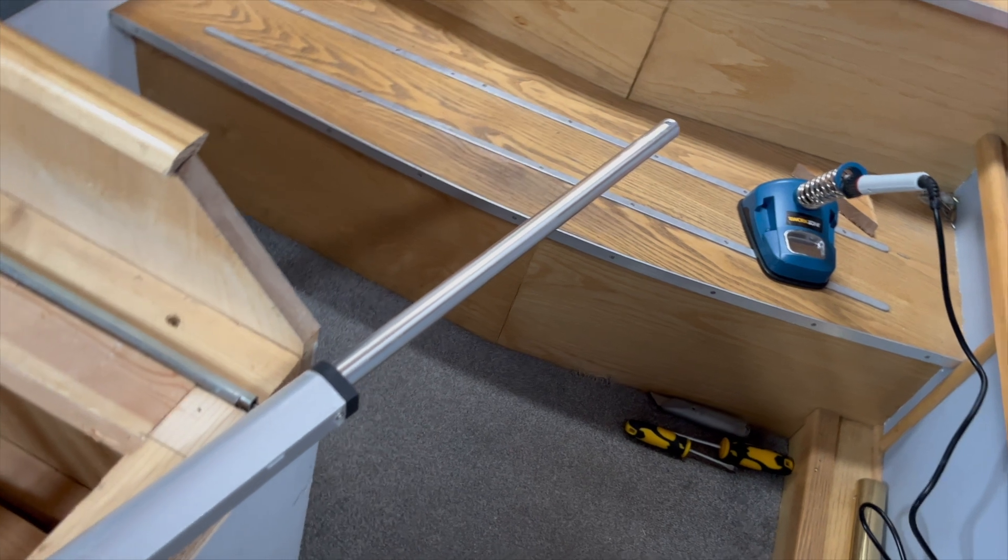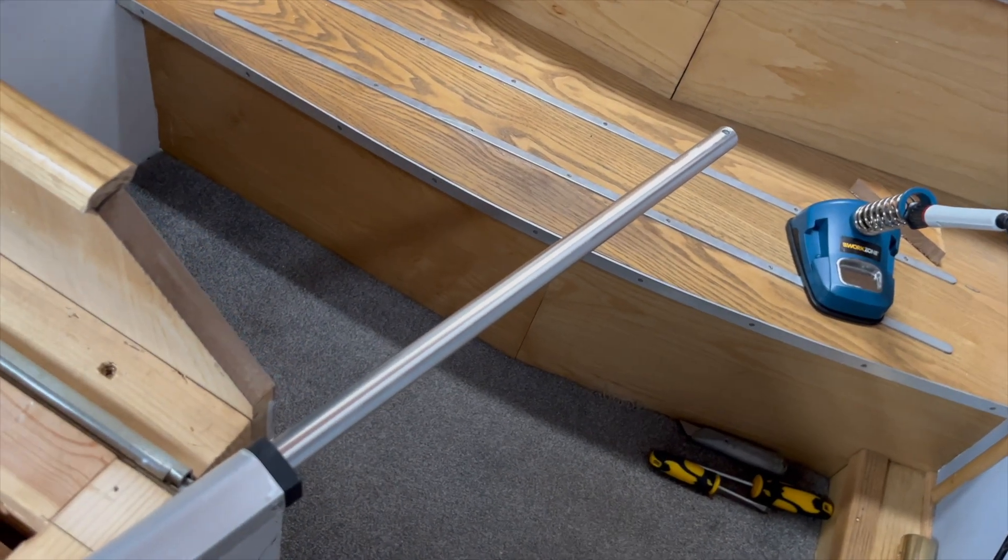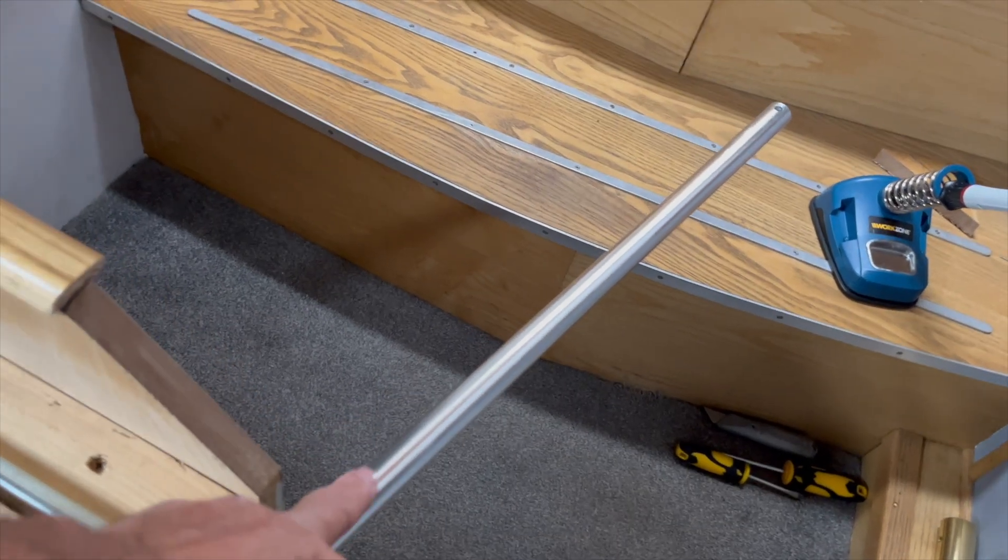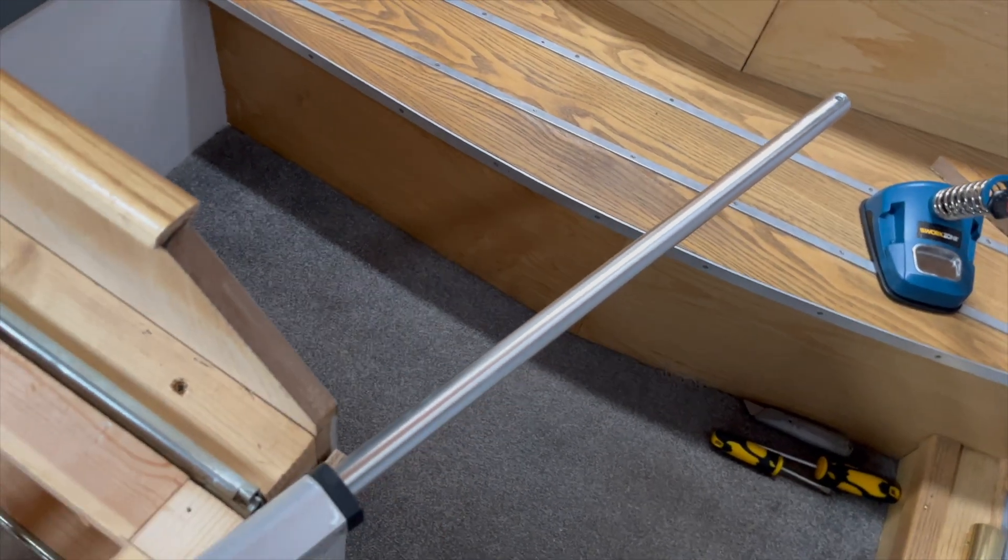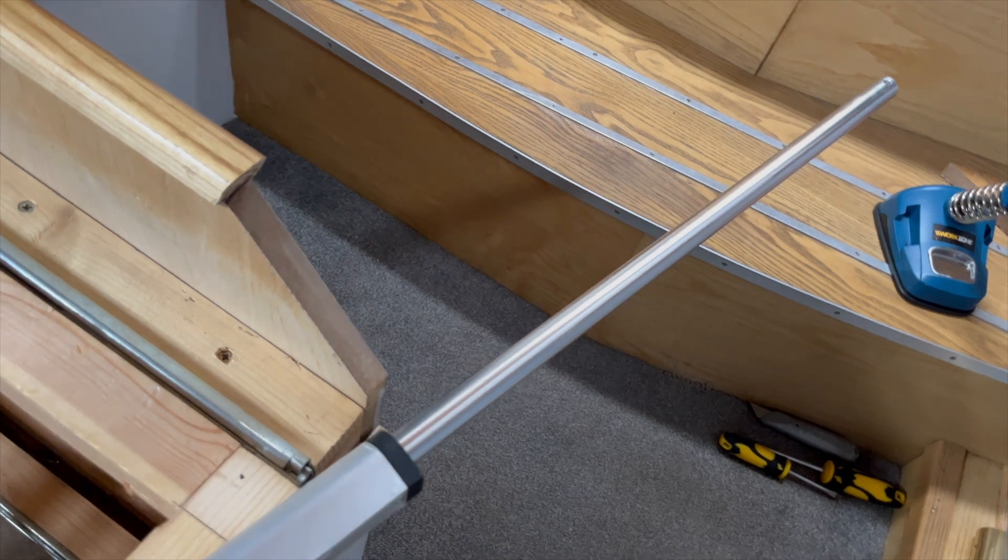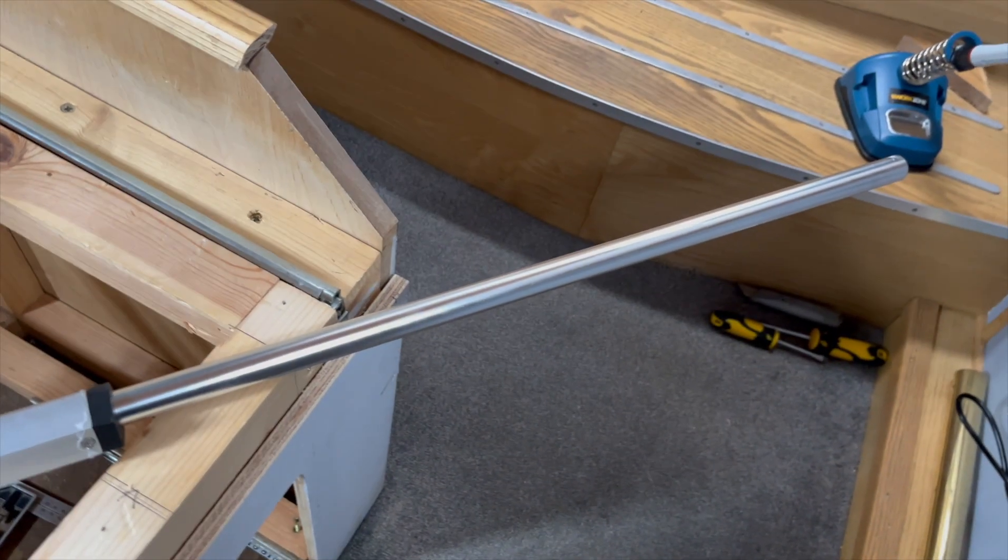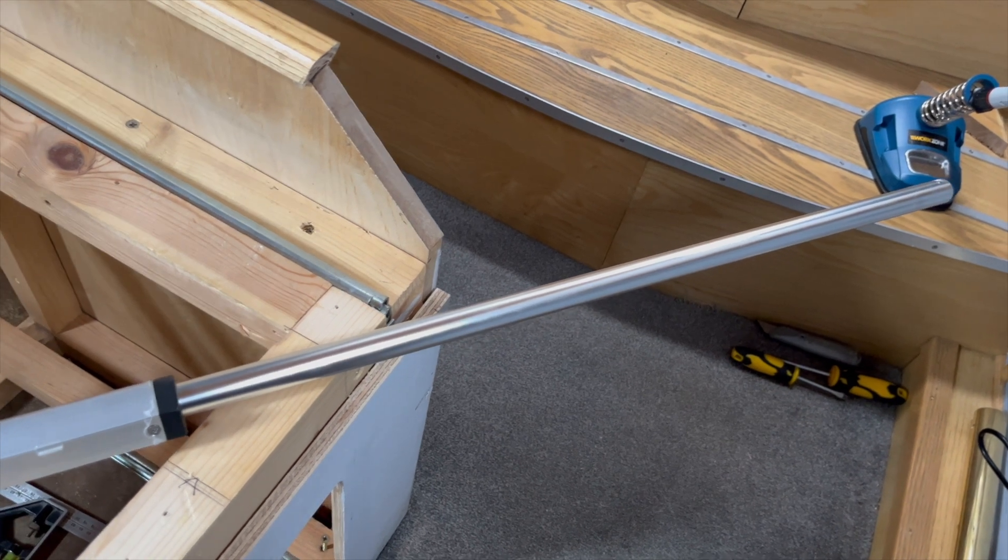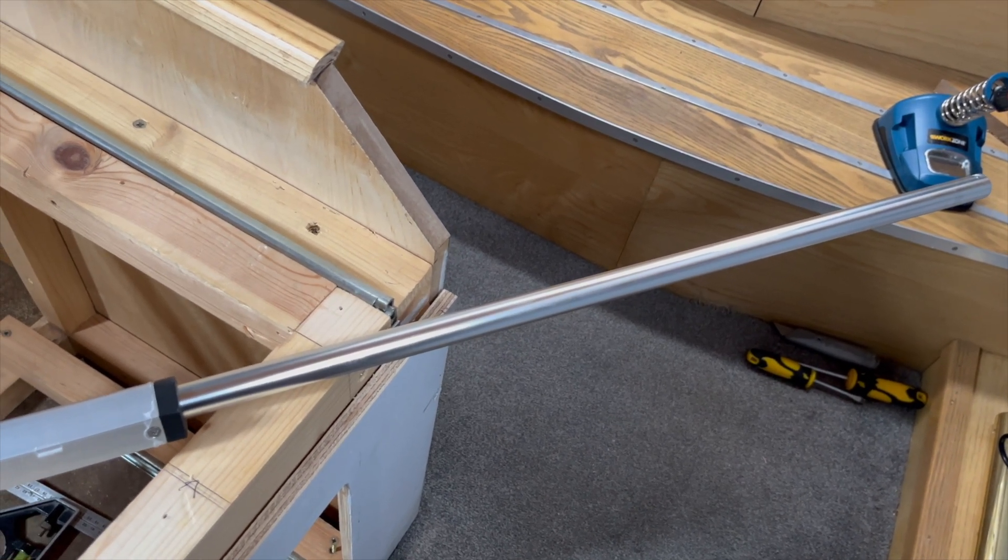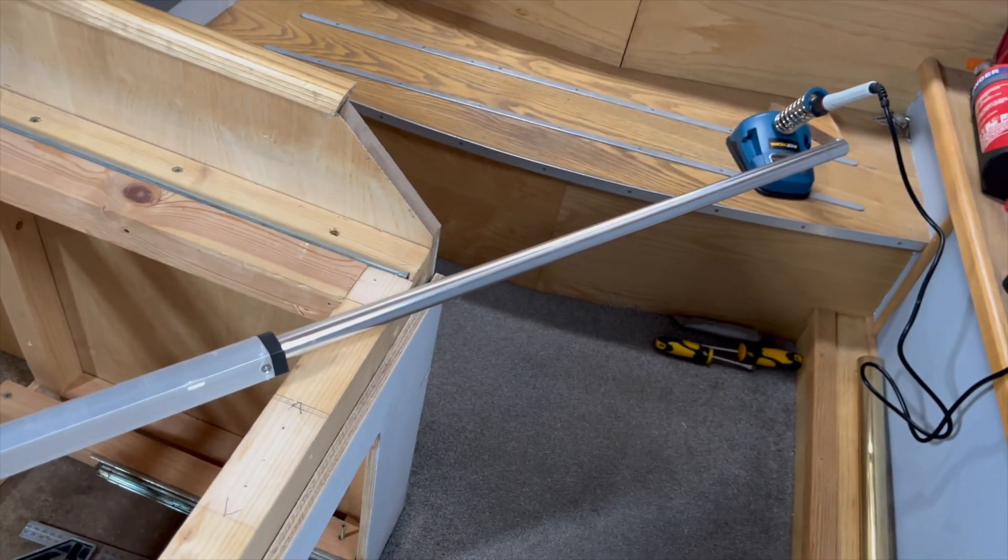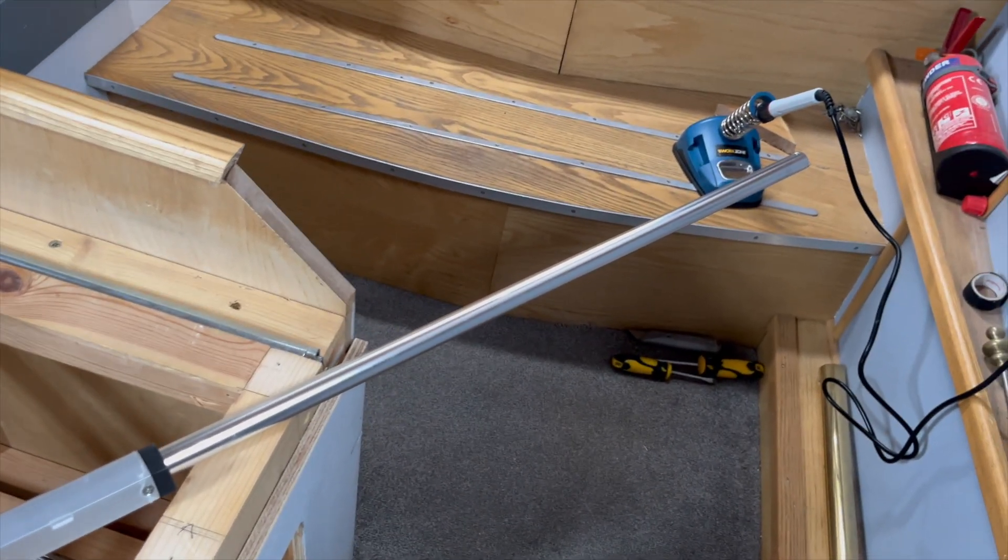These actuators are very strong. If they extend too far when you don't need them, they will actually bend this bar. That's how powerful the motors are, or it could do some damage to where it's fitted on. Adjusting the limit switch like I've done guarantees it won't extend further than you want.